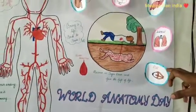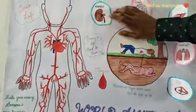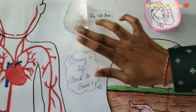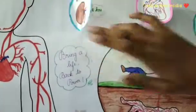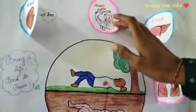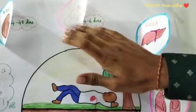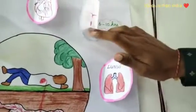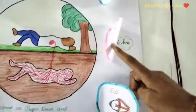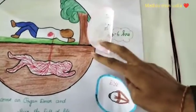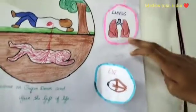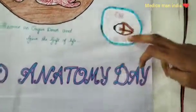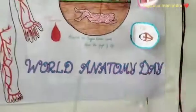They have focused on organ donation. First, kidney — kidney is viable for organ donation for 24 to 48 hours. Next, heart — heart donation is viable for 4 to 6 hours. Next, liver — liver donation is viable for 6 to 10 hours. Next, lung — lung donation is viable for 4 to 6 hours. Next, eye donation is viable for 6 hours after death. This is World Anatomy Day.